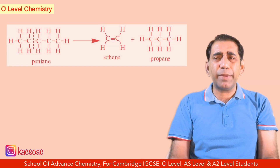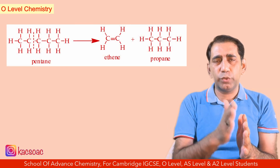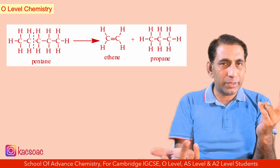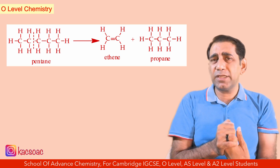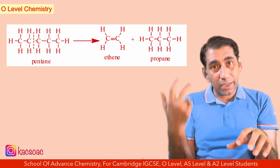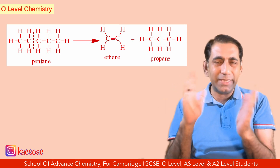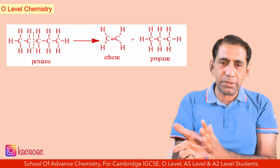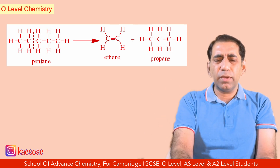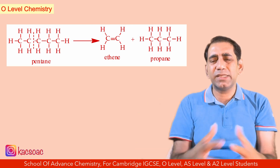If we break pentane between carbon two and carbon three, two carbon atoms are on one side and three on the other. So there is the possibility of a two-carbon alkane or alkene and a three-carbon alkane or alkene — meaning ethene or ethane, and propene or propane, may be formed.